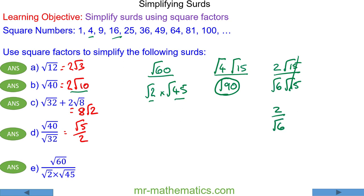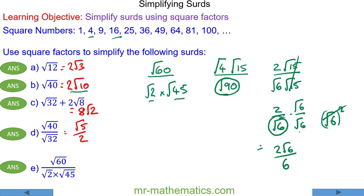Moving on to rationalizing the denominator, which is covered in a further lesson, we can rationalize the denominator of √6 by multiplying both numerator and denominator by √6. So we have 2√6 over √6 × √6, which is 6. Dividing both by 2 gives us √6 over 3. Thank you for watching — check out mrmathematics.com for the full lesson and worksheet.